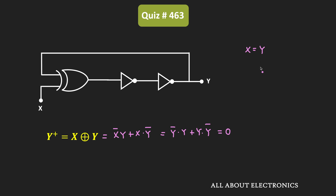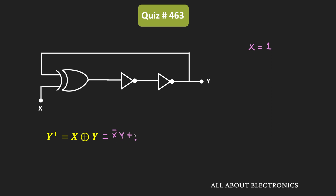Let's take the third condition. Let's see what happens when the input X is equal to 1. Once again, X XOR Y equals X̄·Y + X·Ȳ. With X equal to 1, we will have 0·Y + 1·Ȳ, and that is equal to Ȳ. That means when the input X is equal to 1, the output will be the complement of Y.